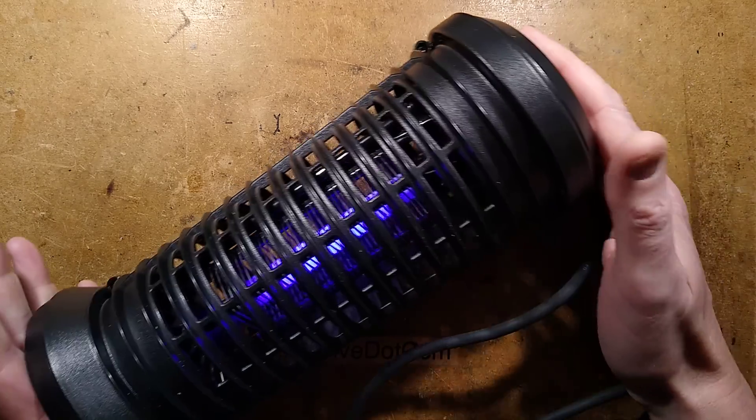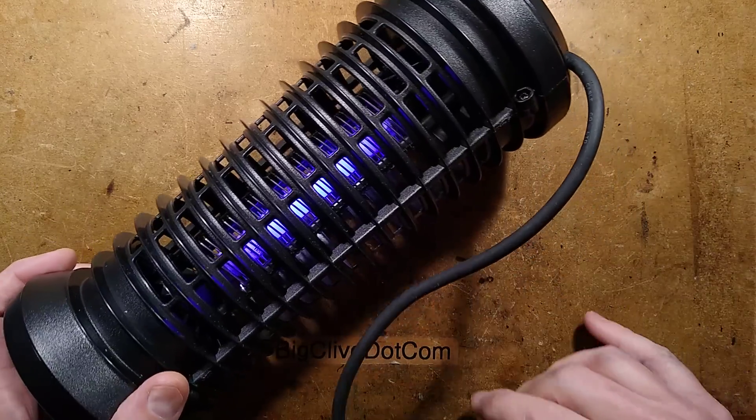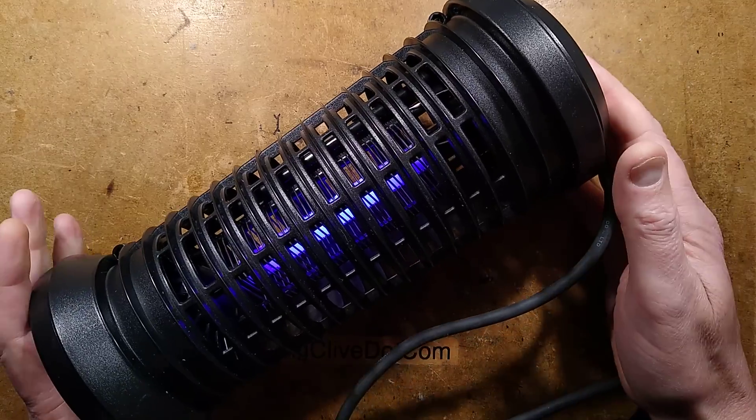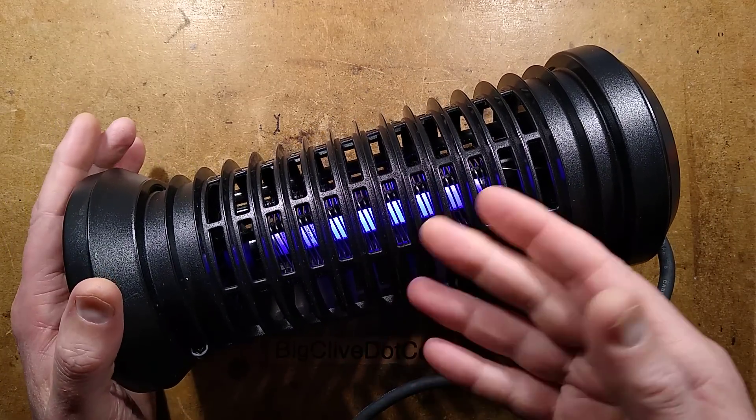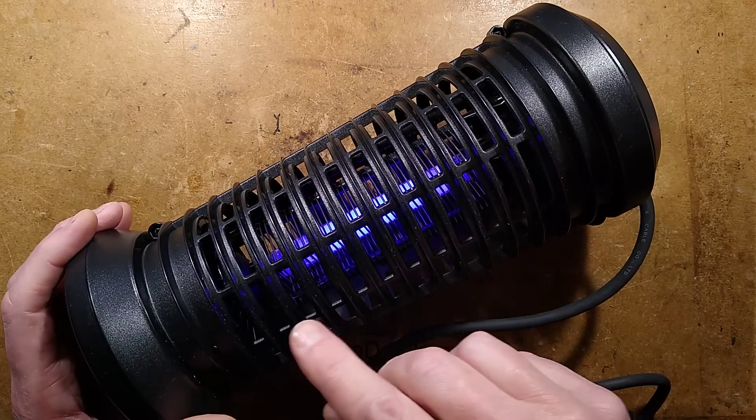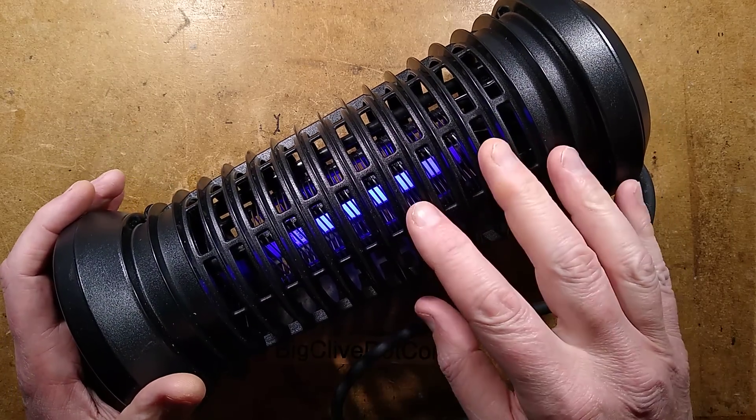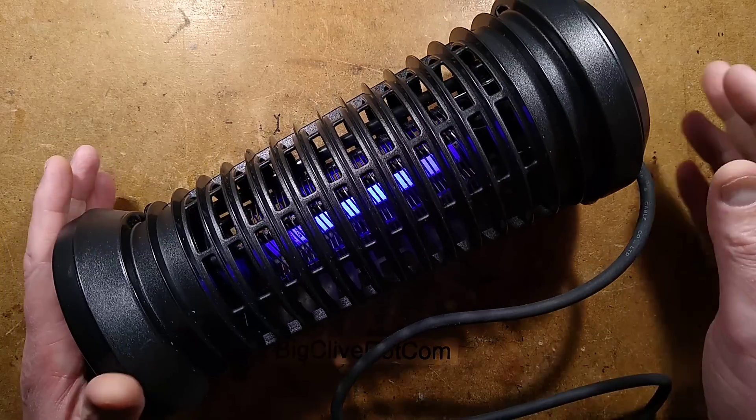Let's take a look at a little insect zapper. This is the traditional lantern type thing, runs off the main supply and it has the two spiral wires inside with a high voltage across them and it has a fluorescent tube, a traditional UVA fluorescent tube to attract the insects.